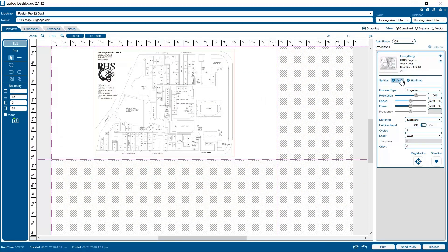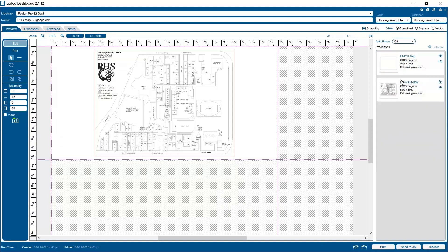We'll begin by selecting split by color to separate our job into two processes, one consisting of the artwork that we'll engrave and one for the red outline that we'll cut.